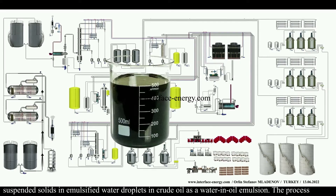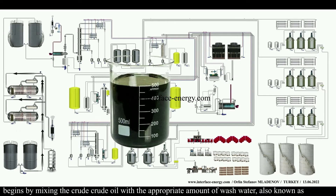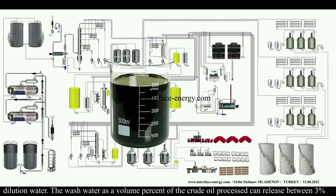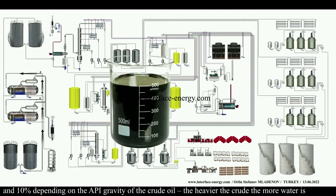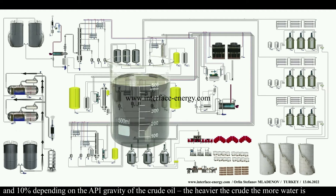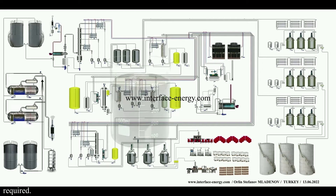The process begins by mixing the crude oil with the appropriate amount of wash water, also known as dilution water. The wash water volume is between 3% and 10% of the crude oil processed, depending on the API gravity of the crude oil. The heavier the crude, the more water is required.